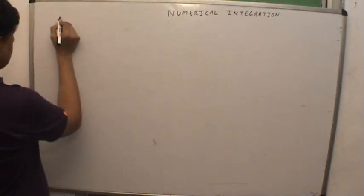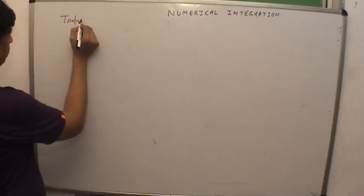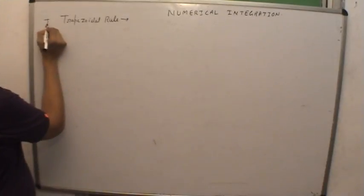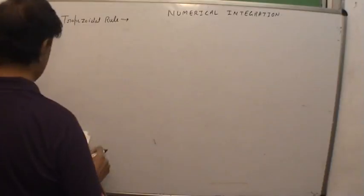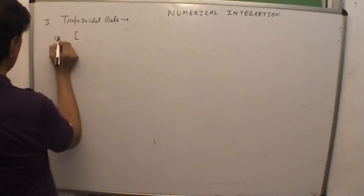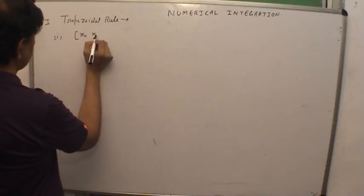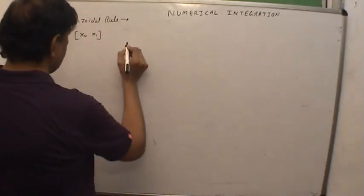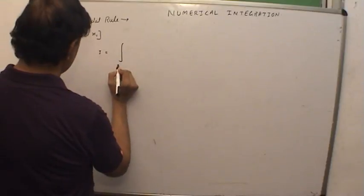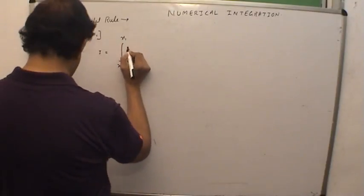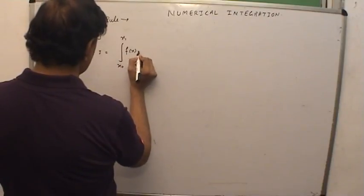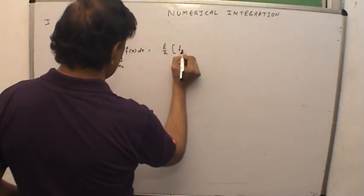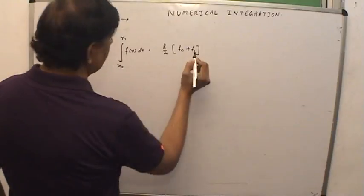First of all, we discuss the trapezoidal rule for solving numerical integration. First we see the rule for two points x0 and x1 — that is, two conjunctive points. If the integration is from x0 to x1, then the integral of f(x) dx is equal to h/2 times (f0 plus f1).